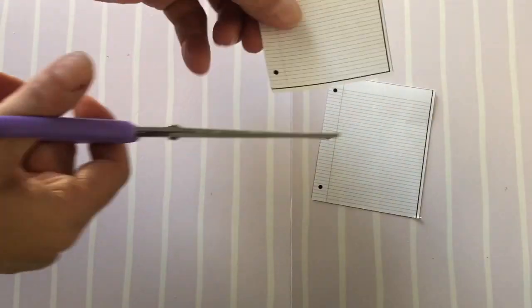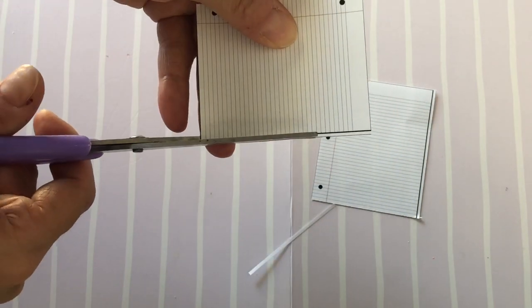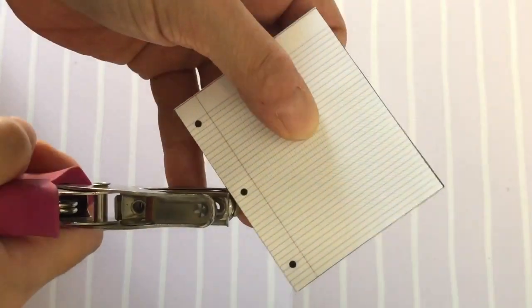For notepaper, we google searched an image, printed it off and cut it out. A brad punch is perfect for small holes.